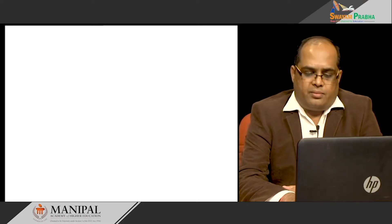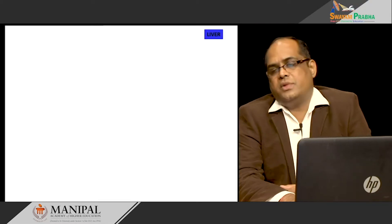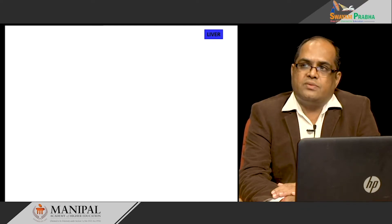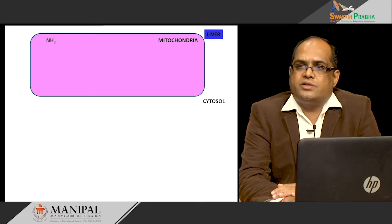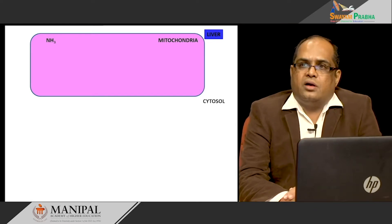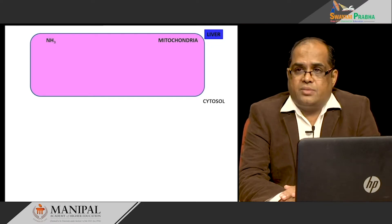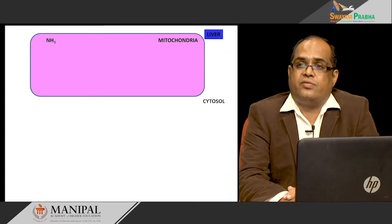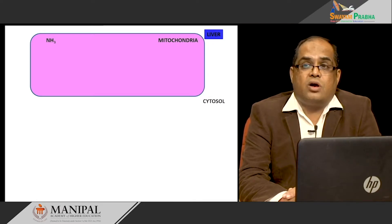This ammonia metabolism — the excretion of ammonia and formation of urea — takes place in the liver, and the reactions of this conversion of ammonia into urea take place both in the mitochondria as well as cytosol. The ammonia that is produced in different tissues comes back to the liver. It may be from the skeletal muscle, coming in the form of alanine, or it may be from kidneys, or from intestine in the form of free ammonia. Most tissues give their ammonia to the liver in the form of glutamine.